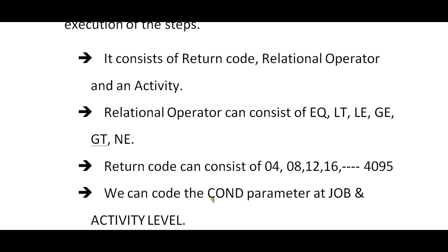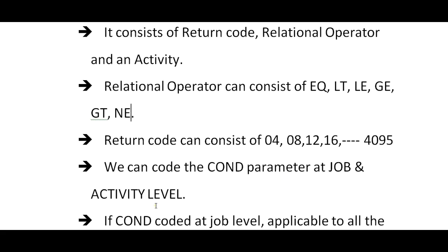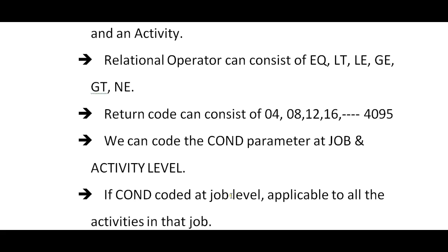The expected return code can be 0, 4, 8, 12, and so on up to 4095. We can code the COND parameter at the job level and also at the activity level. There are different ways of representing the COND parameter — at the job level and at the activity level.